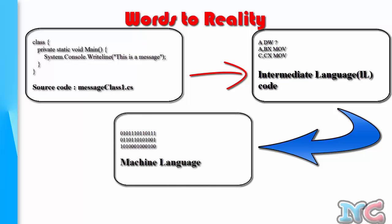Machine language is just binary — a string of zeros and ones. If you want an in-depth understanding of assembly language and machine code, refer to my Assembly Language Primer series. You are looking at three complete steps from source code to an executable. However, if you do not have the .NET framework, the compiler will only convert the .CS source code into the intermediate language and will not go further to create machine language that the machine can recognize.